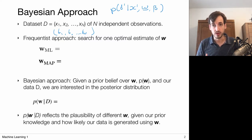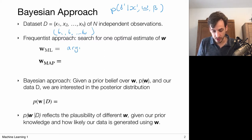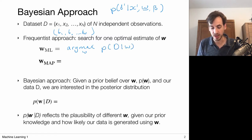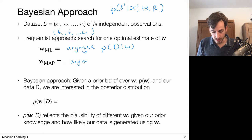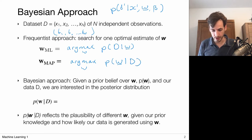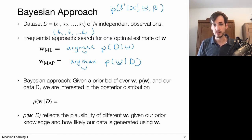We discussed two approaches for finding optimal estimates for w. One was the maximum likelihood approach, in which we selected the model parameters w that maximized the likelihood of the data being explained by that model. In the MAP case, we chose the parameters that maximized the probability of the weights given the data. These two approaches are considered frequentist, because we discard any uncertainty regarding w — we just pick the most optimal choice, making a point estimate.